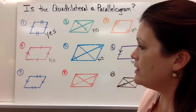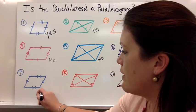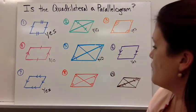For number seven, you can tell that both pairs of opposite sides are parallel, which is a definite yes.